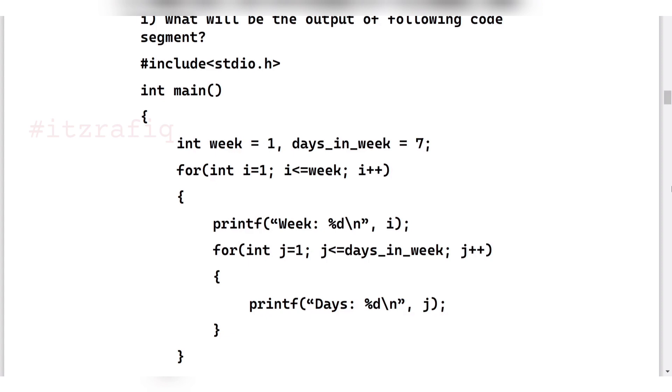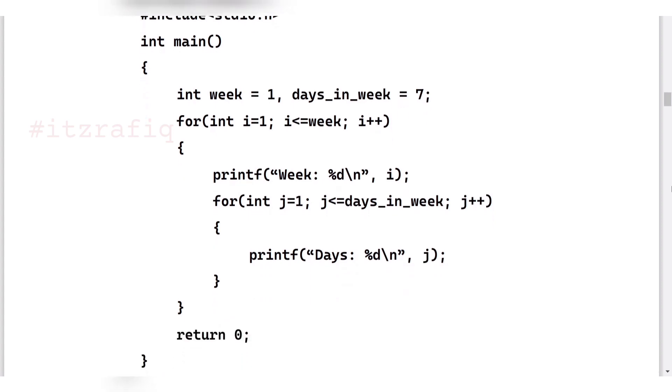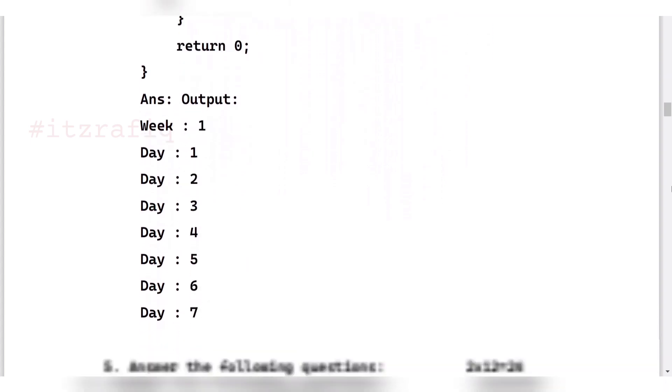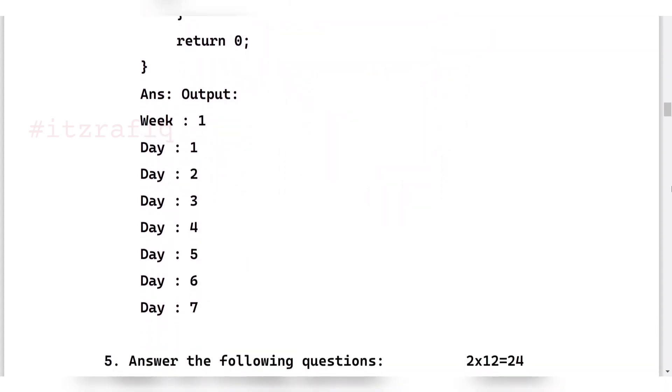Now output of the following code segment. Here see this is a nested loop - there are two counter variables, week and days. In week value is one and days value is seven. That means week can run only once, and inside week one more loop will be there, days in a week, that will execute seven times. Also in print statement there is week and day option. So the first output will be week one, and in the nested loop it will execute like day one, day two, day three, day four, day five, day six, and day seven.